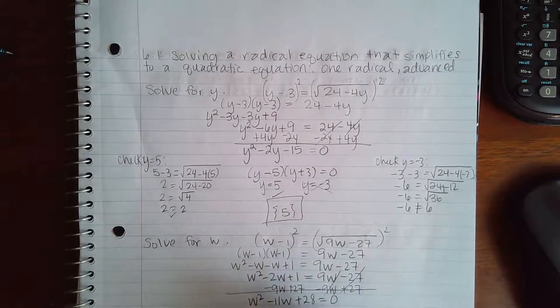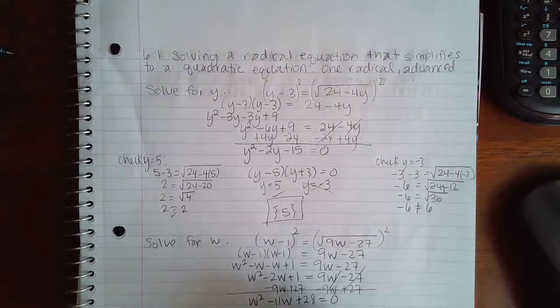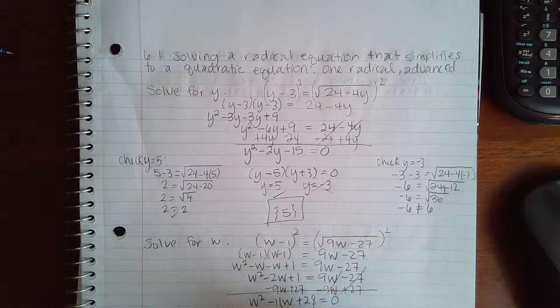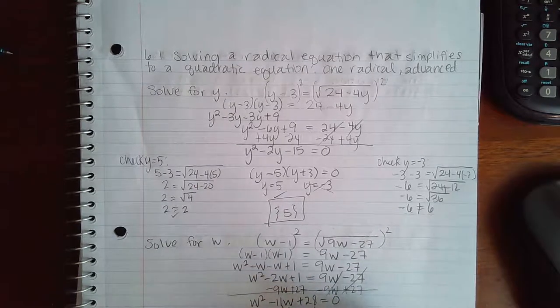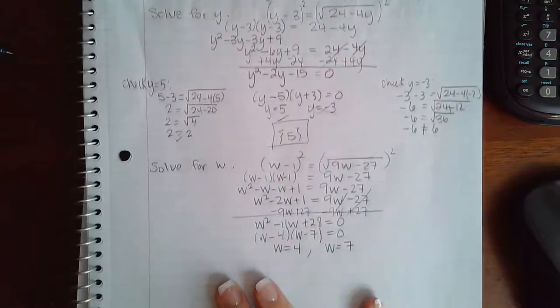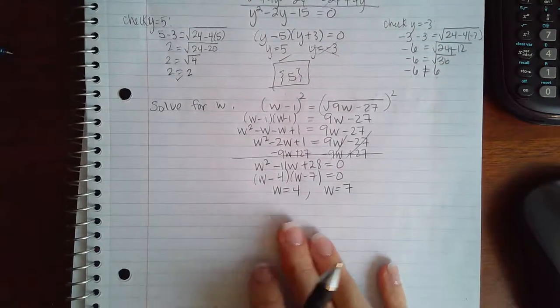So I can factor that into w minus 4, w minus 7. So then I get w equal to 4, and w equal to 7. And then of course, we do have to check both of our solutions.